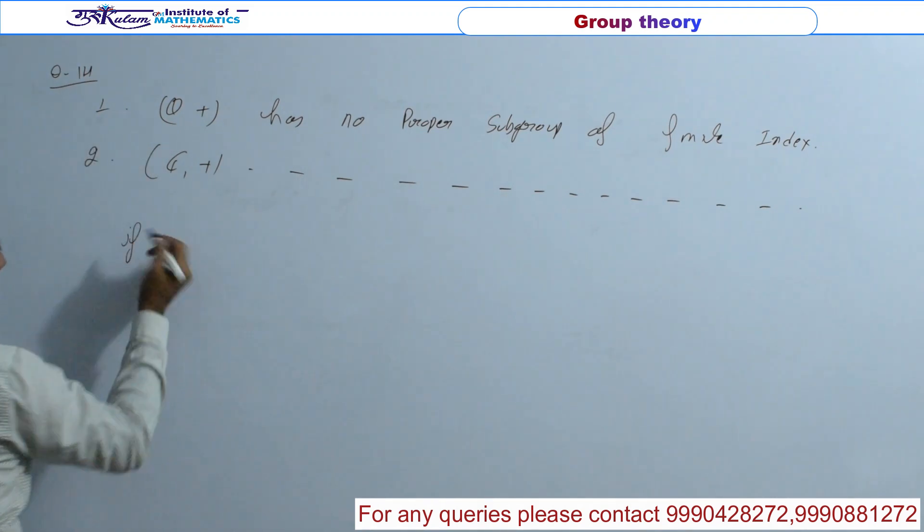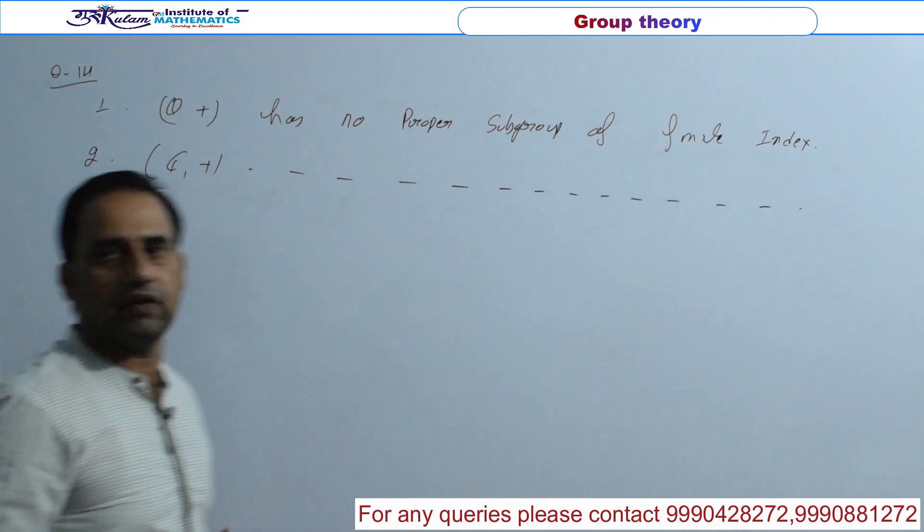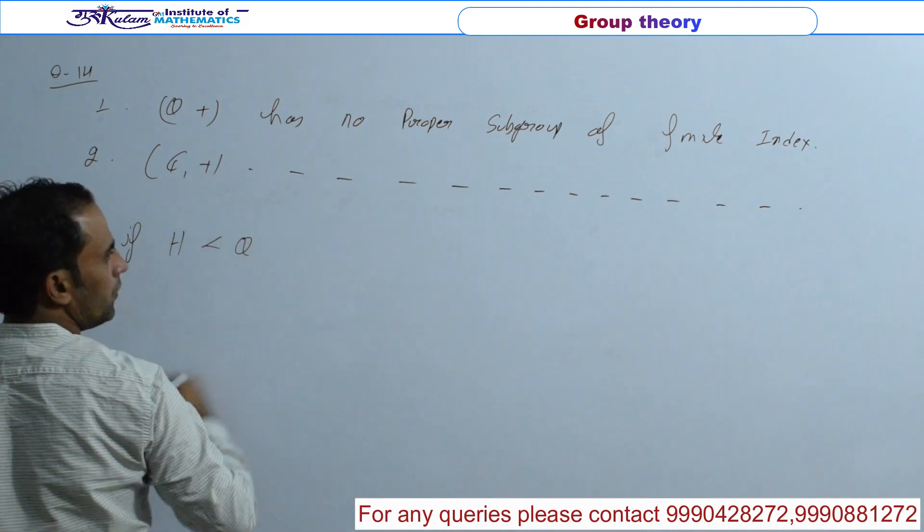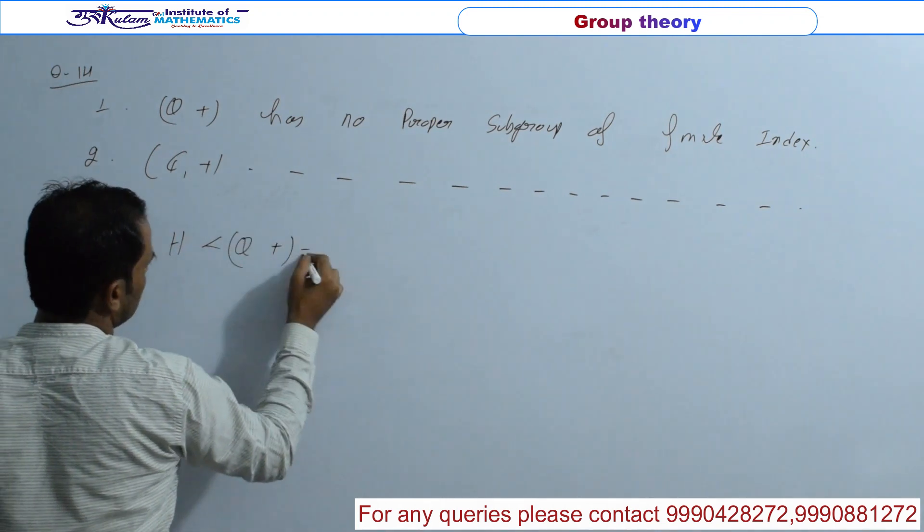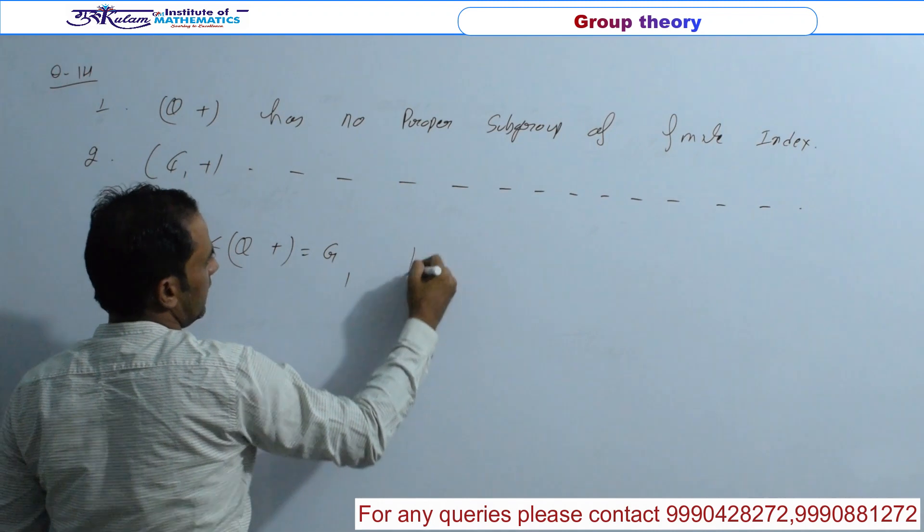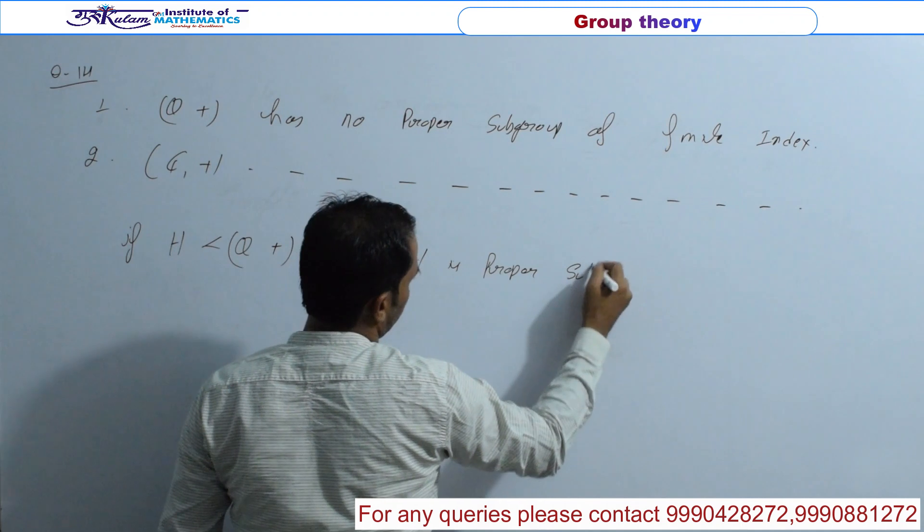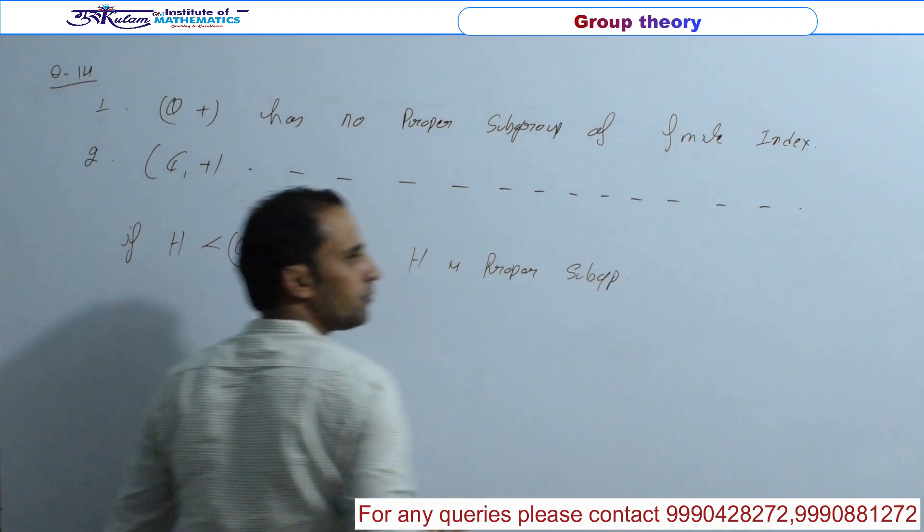Assume कर लेते हैं. जब भी इस type का question है, आपको proof करना है यह verify करना है. तो just assume कर लो कि H is a subgroup of Q under addition. इसको G notation देता हूँ. Such that H is a proper subgroup.